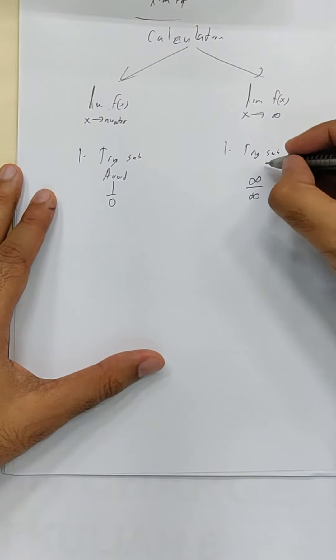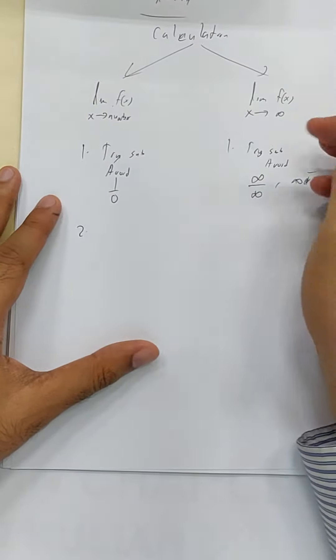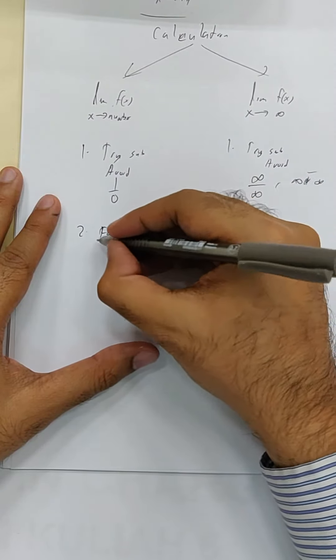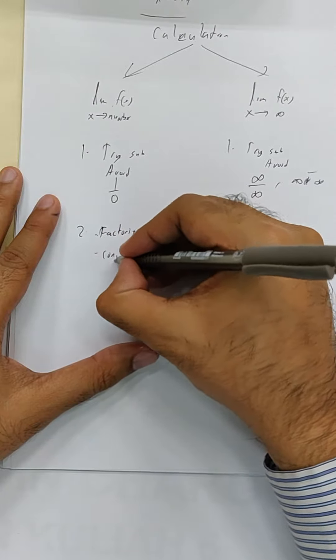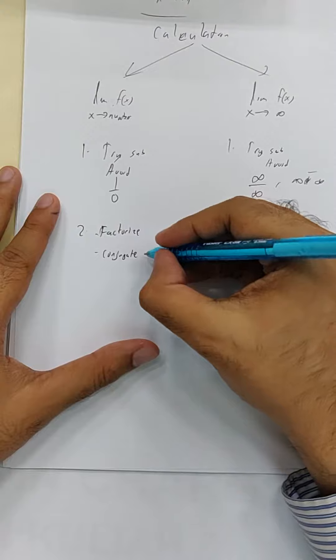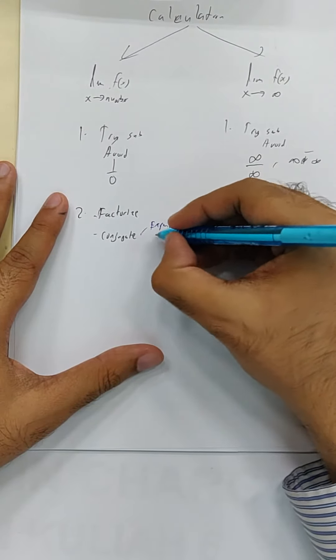If you got these two situations you want to avoid, what happened? For number, what do you do? You factorize all, or you conjugate. What's the new rule for conjugate? Expand conjugate part only.